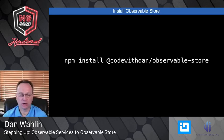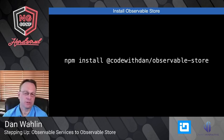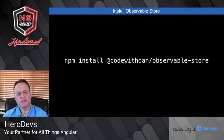How do you get started? Well, you install it — this will be the easiest step. You can simply npm install @code-with-dan/observable-store. Sadly the package name 'observable-store' was taken so I had to create my own scoped package, but it works well.